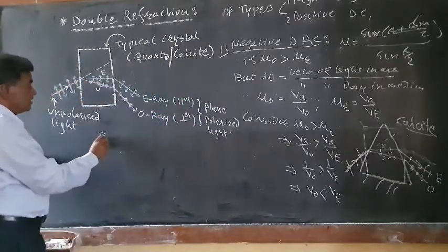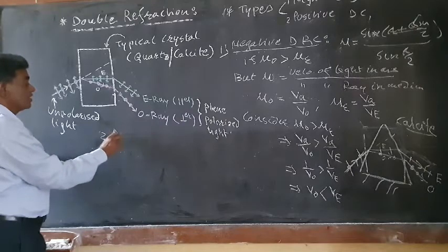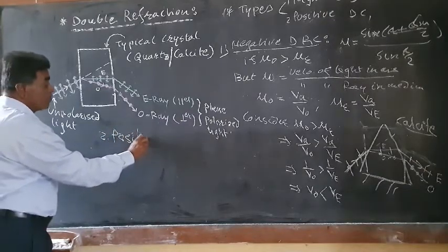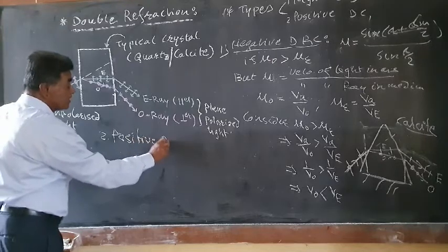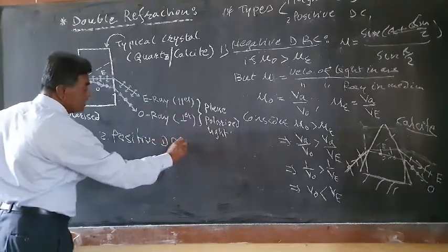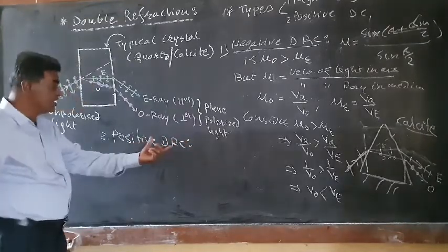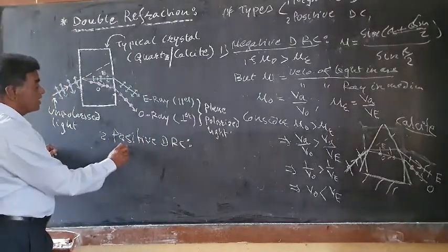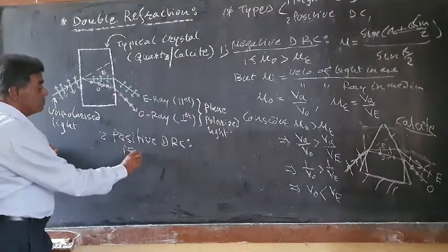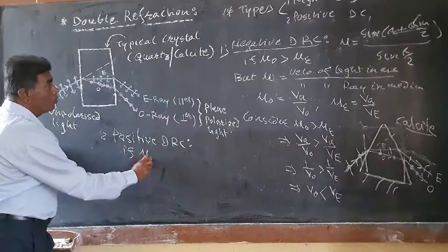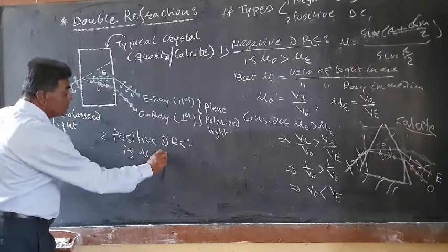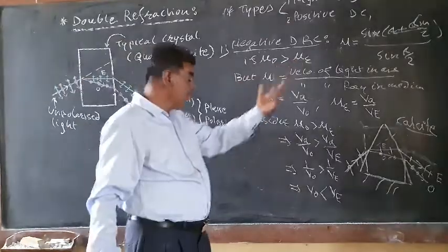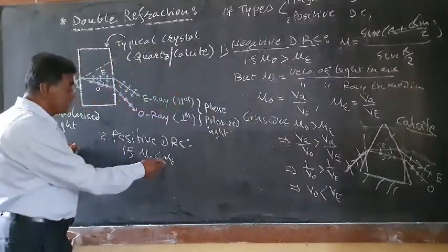The second type is the positive double refracting crystal. A crystal is said to be positive if μ_E > μ_O — that is, the refractive index of the extraordinary ray is greater than that of the ordinary ray. This is the opposite condition compared to the negative crystal.